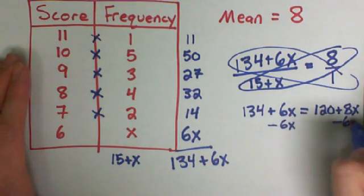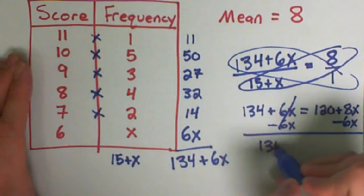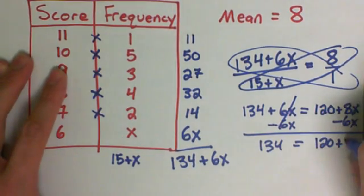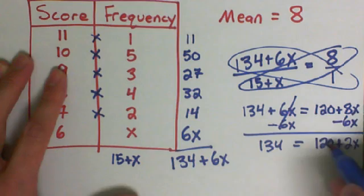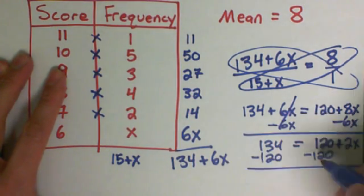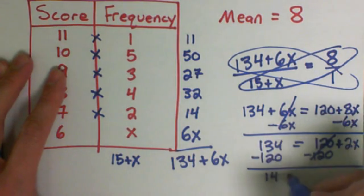And from there on, it's not too bad of a regular equation to solve. I subtract my smaller x to start. 8x minus 6x leaves 2x. I'm going to get rid of this number here by subtracting the 120.